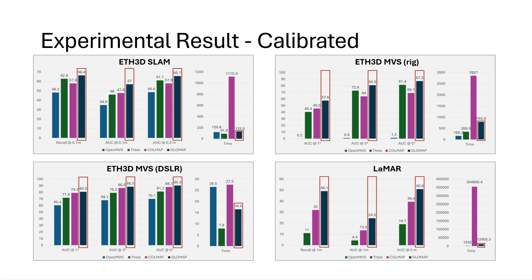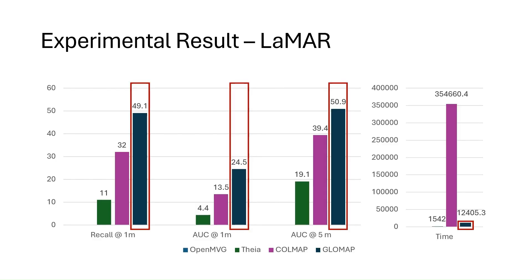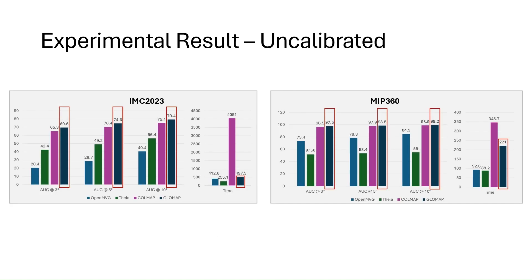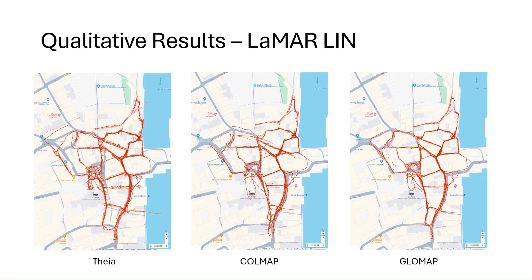Detailed experiment results are as follows. For calibrated datasets, we achieve the highest accuracy across all four datasets. Notably, for the large-scale Lamar dataset, we achieve over 15 more points in recall at one meter while being about 30 times faster than COLMAP. The trend also extends to uncalibrated datasets: we obtain similarly accurate results on IMC-2023 and MIP-360 datasets while being several times faster than COLMAP. More qualitative results can be found in the paper.